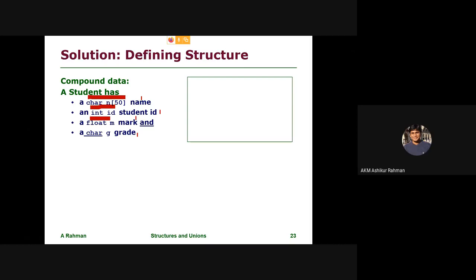This is the first thing that we have to define in the structure. We have an array for the name. We have an integer for the ID. We have a float for marks. Finally, the mark rate corresponds to the grade as a character.